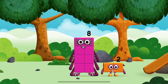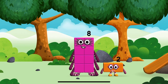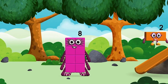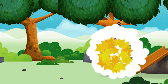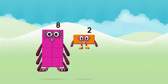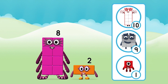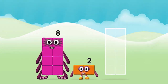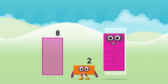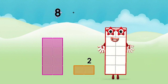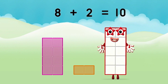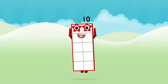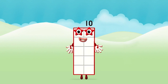Which number block did you find? I love things there are two of! What number block will you make when you add these two number blocks together? Well done! You were right! Add the number blocks together! Eight plus two equals ten! That's it! You made number block ten!